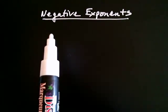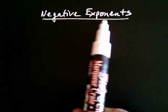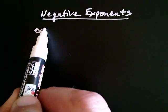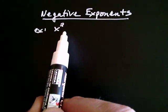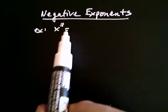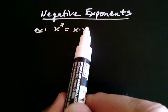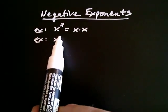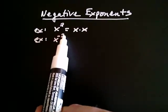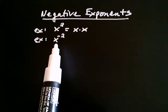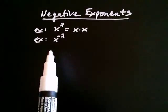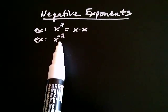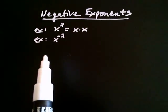In this video, we're going to talk about negative exponents. We know what we mean when we write x squared — that simply means x multiplied by x. But it's not clear what we mean when we write something like x to the negative second. After all, it doesn't make any sense to say x multiplied by itself negative two times. But will there ever be a situation where the exponent is negative? And the answer is yes.